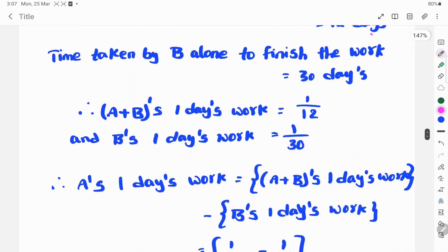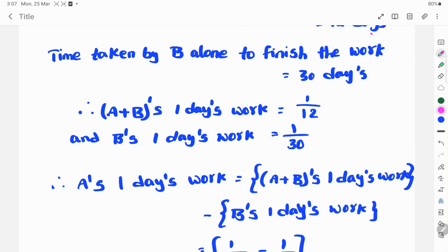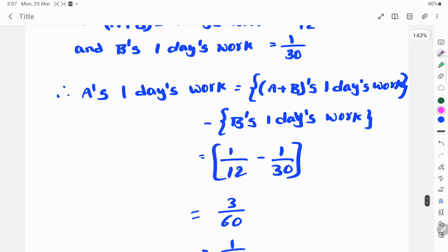A's one day's work is equal to A plus B's one day's work minus B's one day's work, which equals 1 by 12 minus 1 by 30.